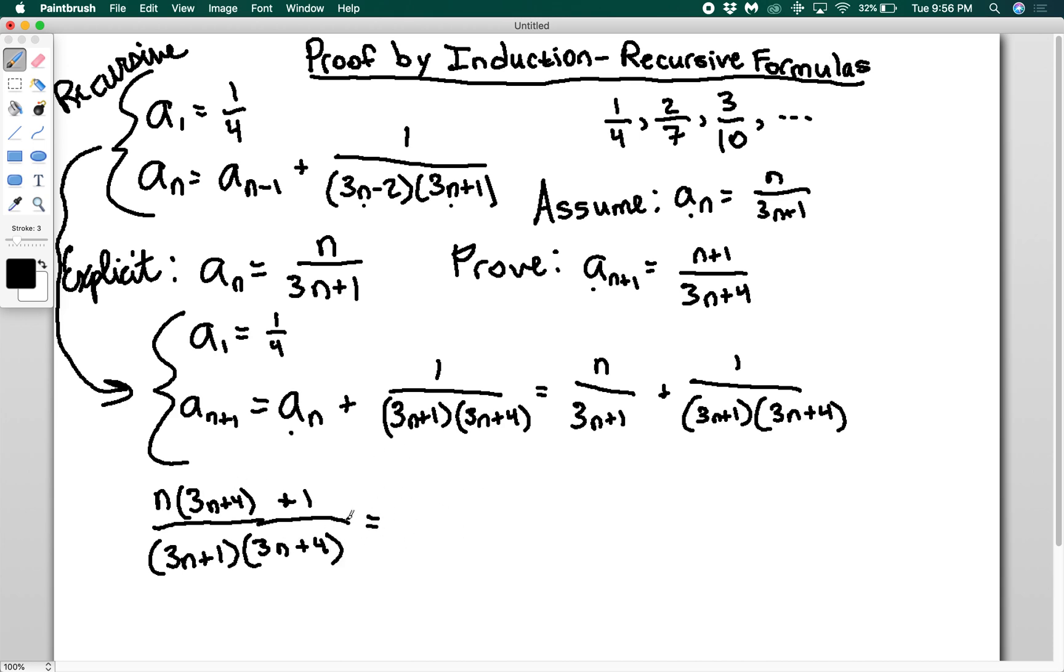I'm going to distribute out the top, so I have 3n² + 4n + 1 divided by the denominator. On the top, I have (3n+1)(n+1) when I factor this, which cancels with the 3n+1 on the bottom.